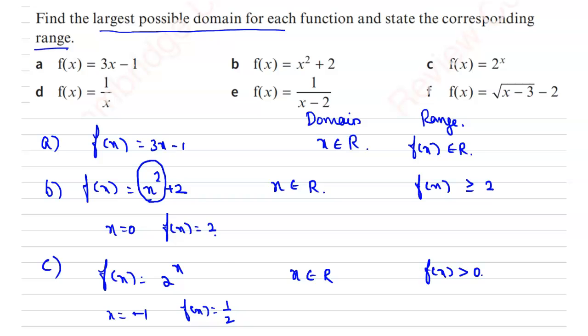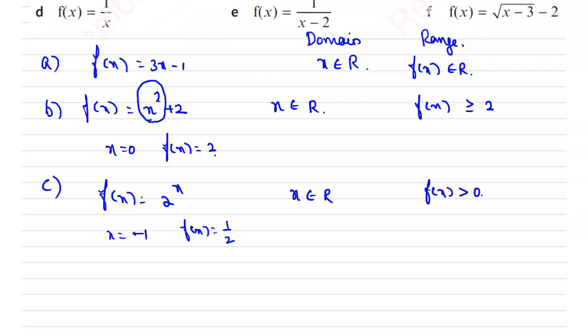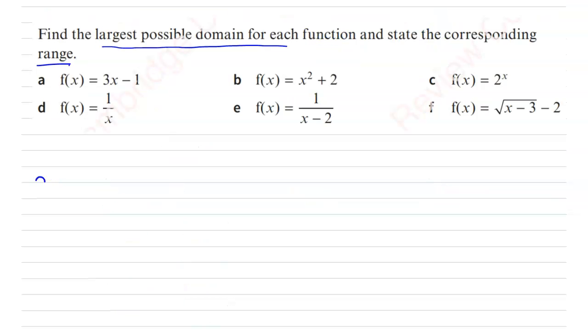Because if we take x as minus 1, then f of x will be 1 by 2. 2 power minus 1 is 1 by 2. Similarly if we take x as minus 5, then f of x will be 1 by 32. So we will get only positive values. And if we take x equal to 0, f of x will be 2 power 0, which is 1. So we will get always positive value which is greater than 0, not 0. Therefore f of x is greater than 0.